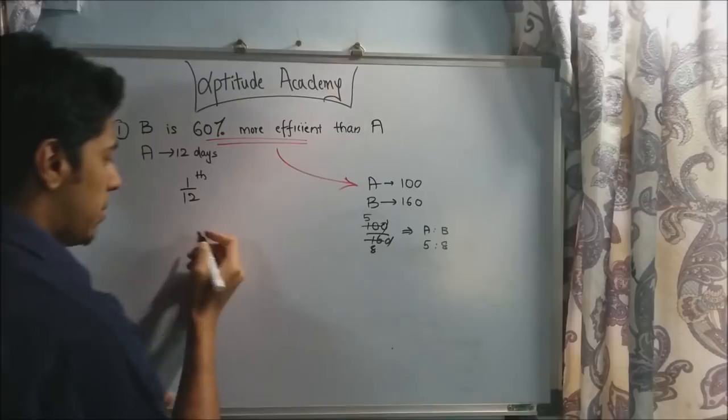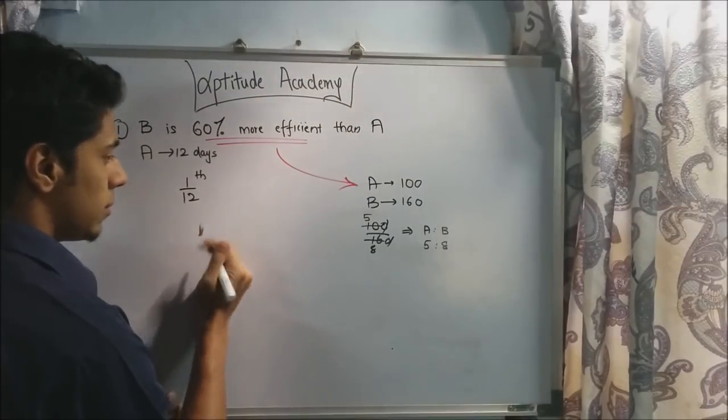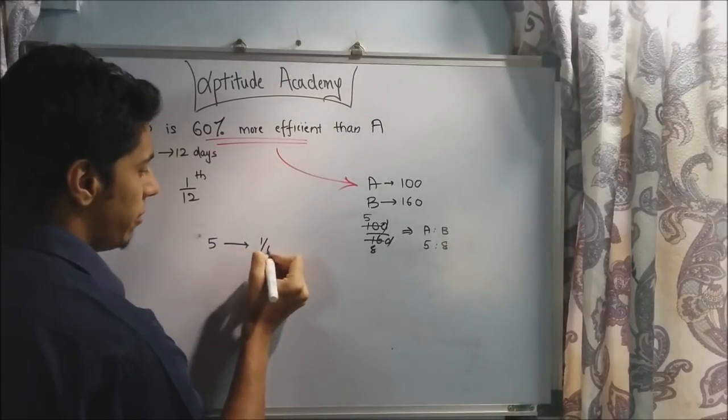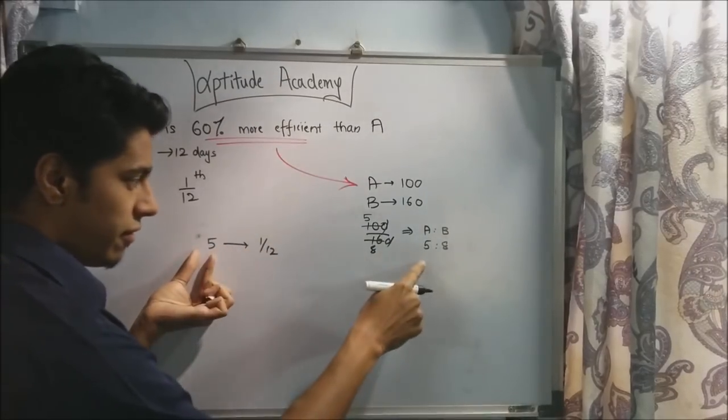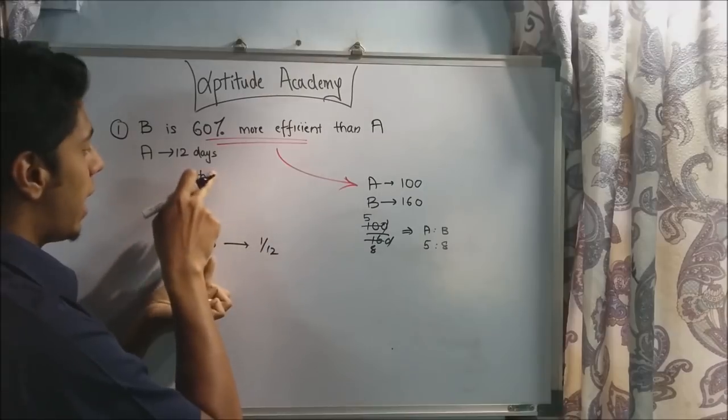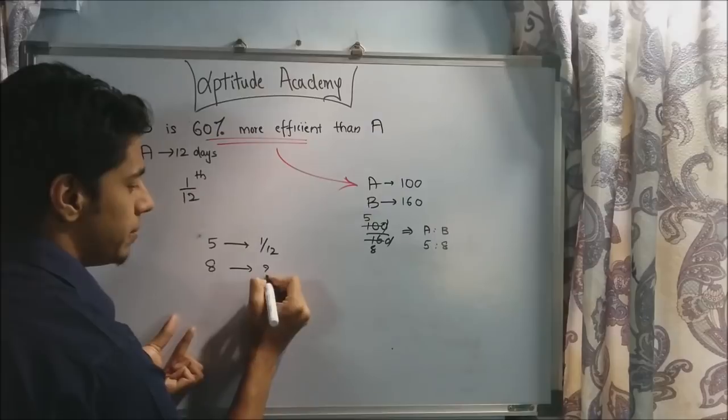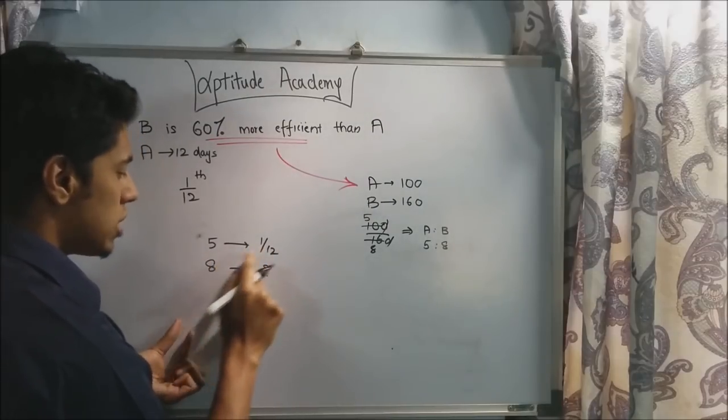If you take a cross multiplication, you can say this is 5 implies 1 by 12. A is 5 and it finishes 1 by 12 of the work every day. So B will finish how much every day?